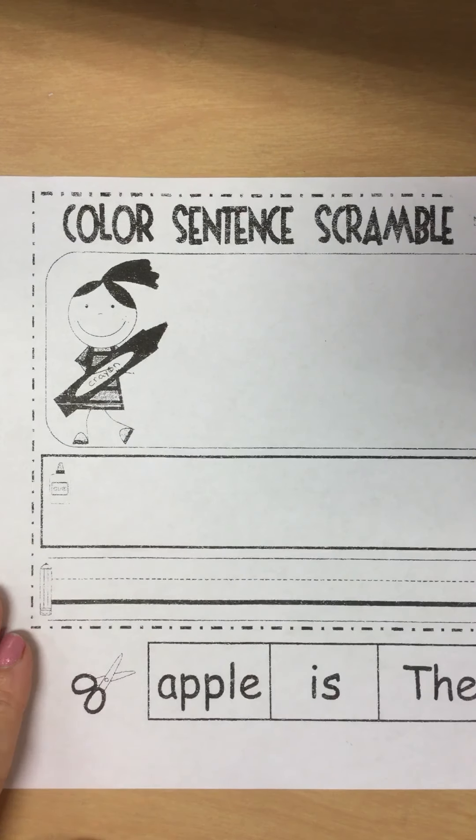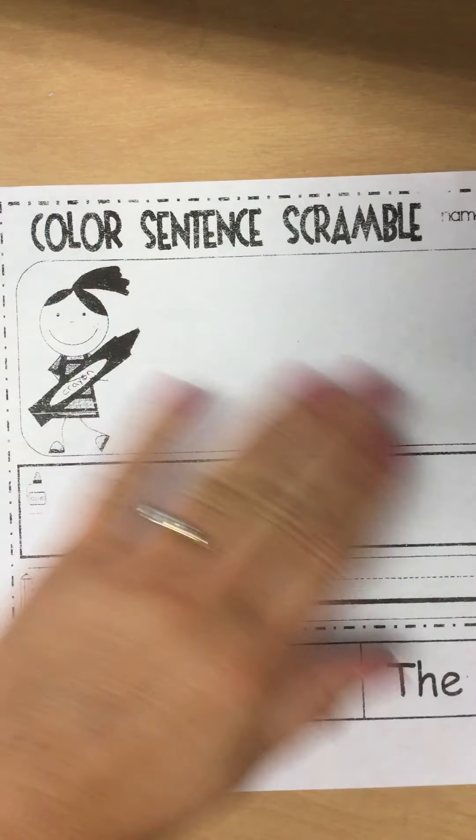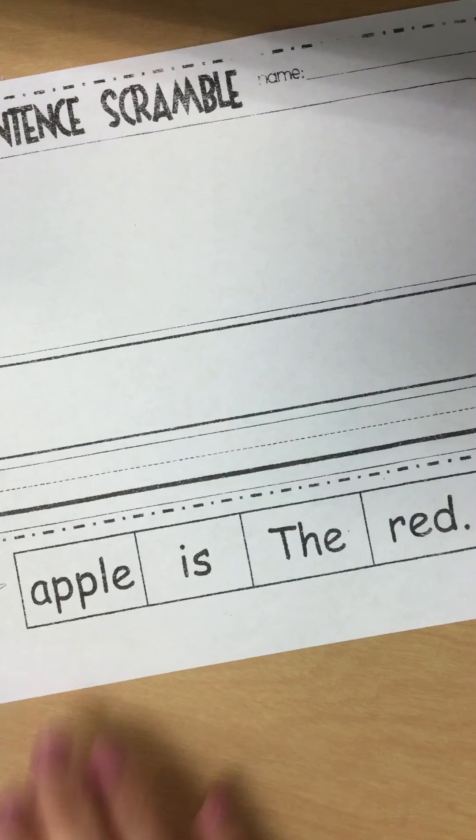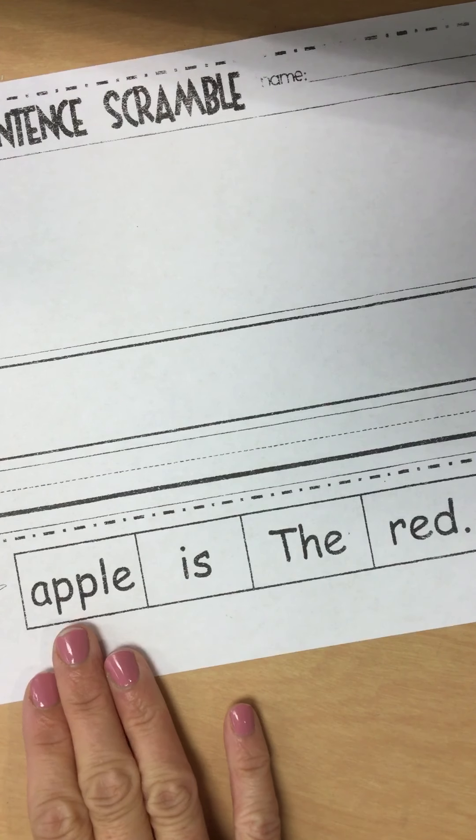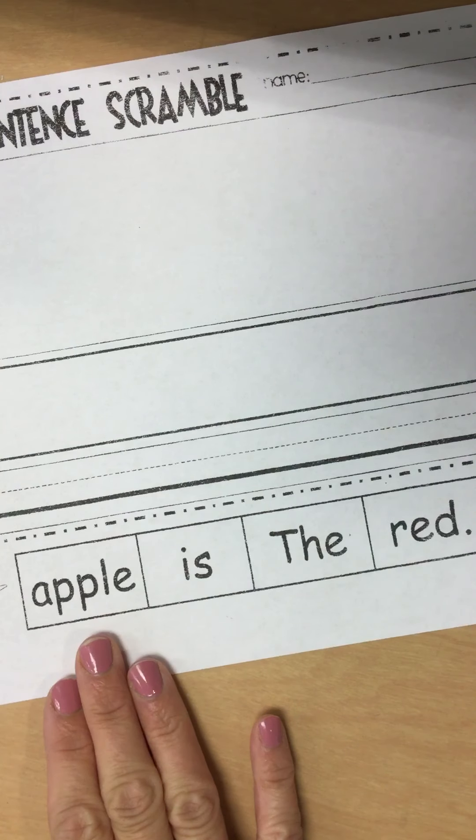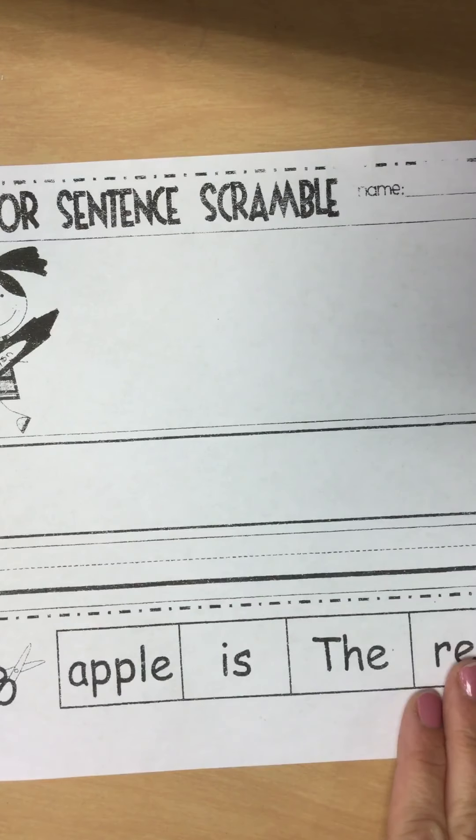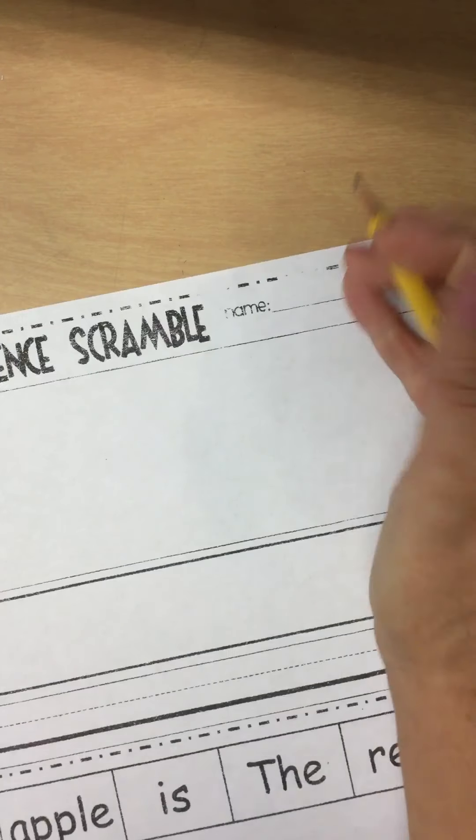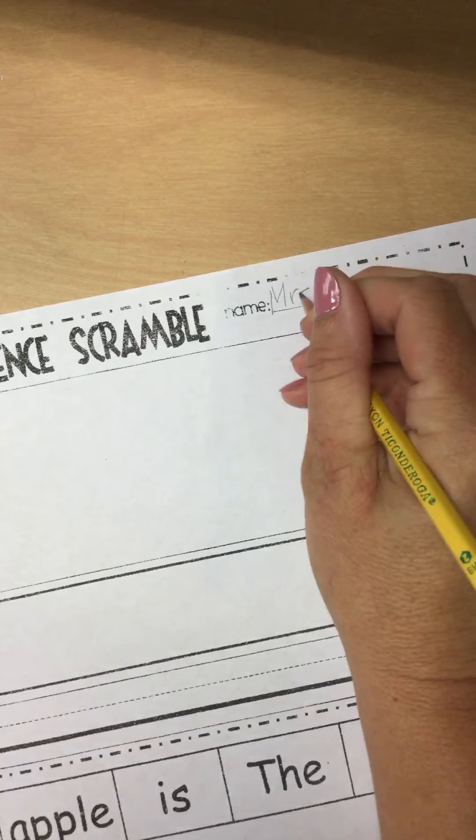This is instructions for our color sentence scramble for this one with that word apple at the beginning and the word red at the end. So the first thing I'm going to do is write my name at the top.